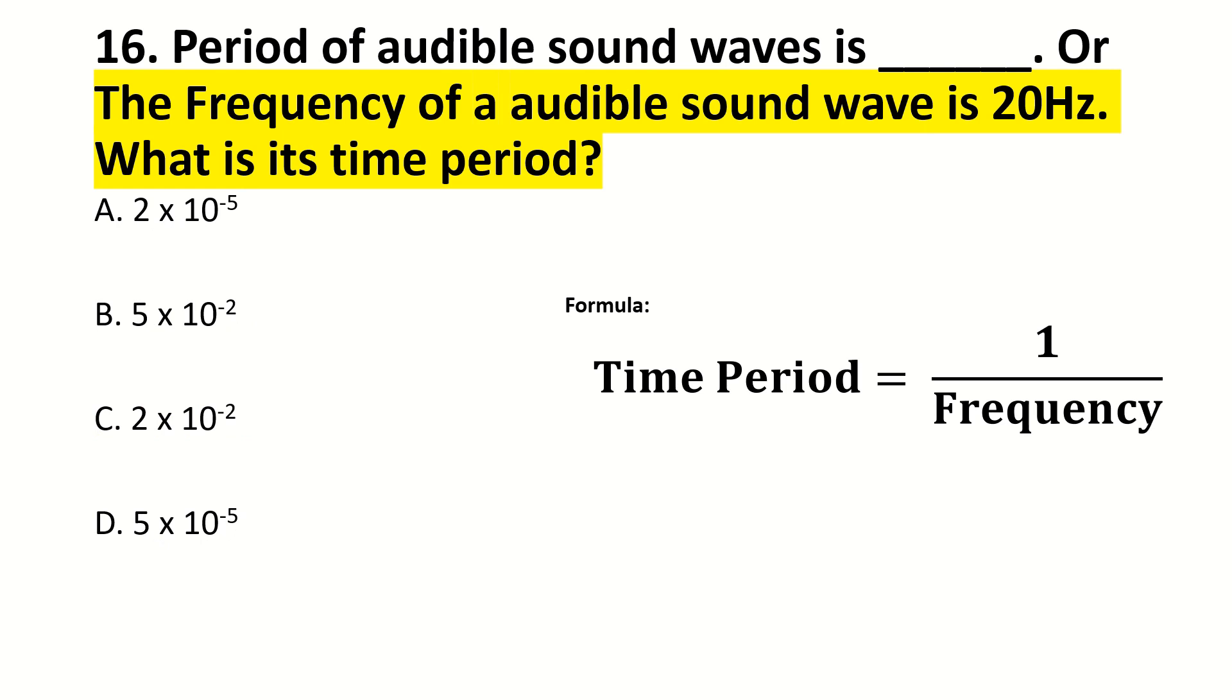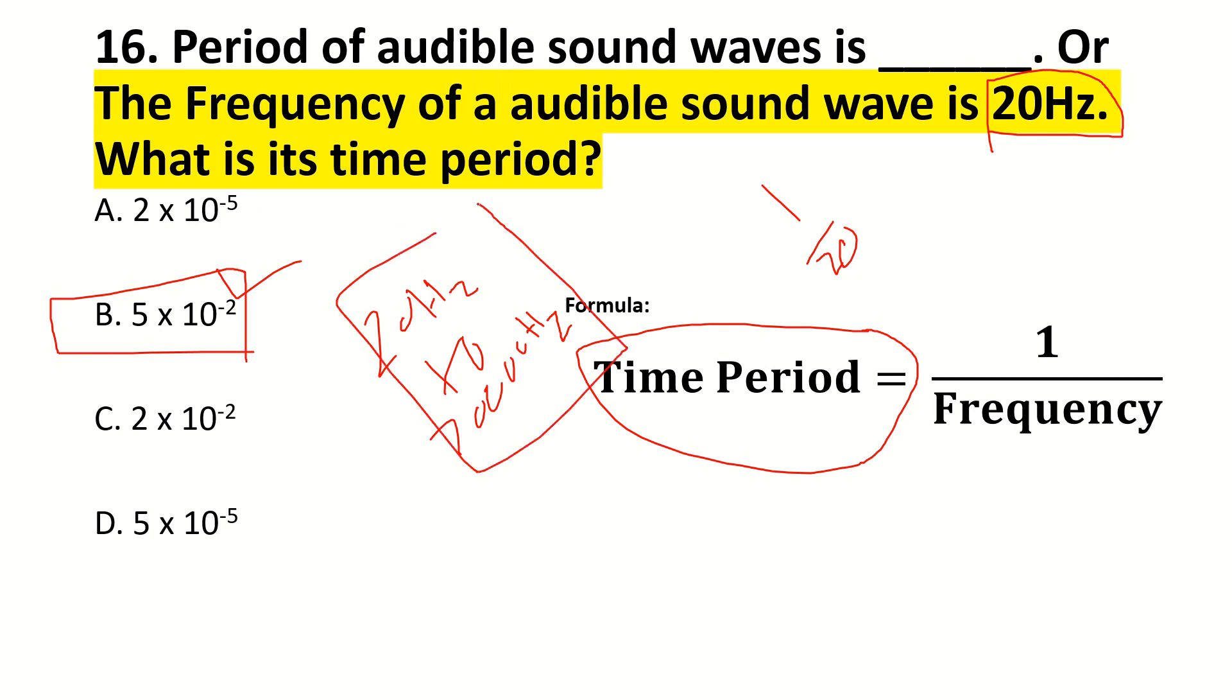Period of audible sound waves is dash. I was trying to find the frequency is 20 Hz. If we find time, the formula is time period equals 1 divided by frequency. So we simply 1 divided by 20. We will have time. So this is my MCQ, this will be my answer frame. So it's the right answer, which is this one. If we divide this one, we can find the value of time. If this is a mistake, then it will be the frequency of audible sound, then it will be the answer.